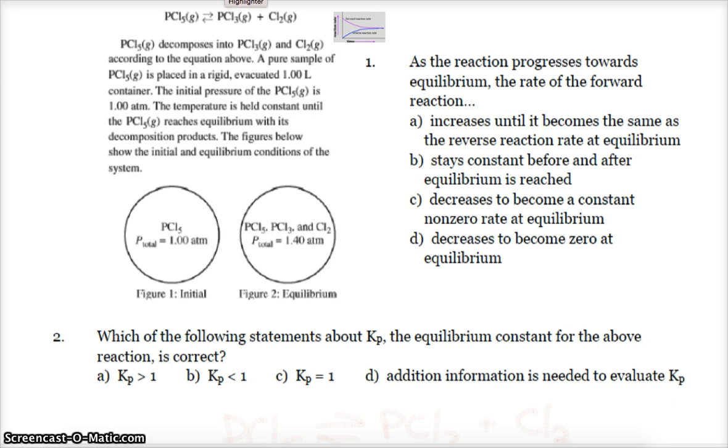Hooray for 1 liter. The initial pressure of the PCl5 is 1 atmosphere, and you can see that down here in our vessel. We see this in our initial vessel, 1 atmosphere of pressure. The temperature is held constant, and we reach equilibrium with the decomposition products. Figure 2 shows us our equilibrium. All three gases are there, and we have a total pressure of 1.4 atm, which will become important.